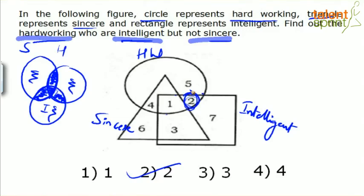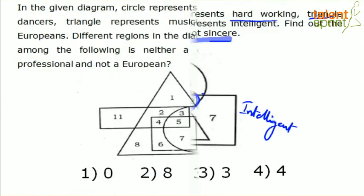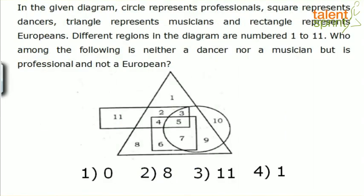Next question: in the given diagram, circle represents professionals, square represents dancers, triangle represents musicians, and rectangle represents Europeans. Just mark what each shape means — circle is professionals, triangle is musicians, rectangle is Europeans, and the square inside is dancers. Different regions in the diagram are numbered 1 to 11.